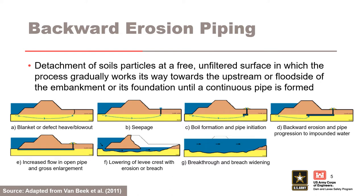Backward erosion piping is an internal erosion potential failure mode for levees and embankment dams that has historically caused numerous failures. It is defined as detachment of soil particles at a free unfiltered surface in which the process gradually works its way towards the upstream or flood side of the embankment or its foundation until a continuous pipe is formed. To occur, there must be a flow path or source of water, an unprotected exit such as a free face or inadequately filtered exit, eroded material within the flow path that can be carried to the exit, and the material being piped must be able to form and support a roof or pipe.